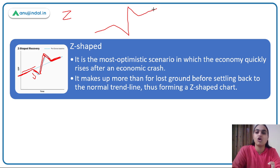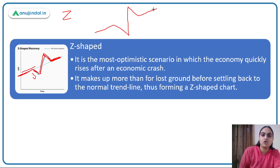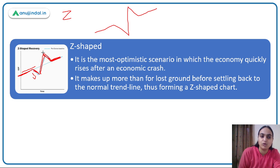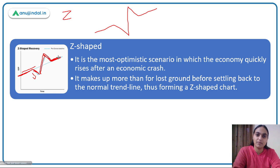The Z-shaped recovery is considered the most optimistic scenario. Why? Because after any kind of economic crash, we see a quick recovery. As much growth as we lost, we make up for it, and then we come back to the normal trend line, thus forming a Z-shape.